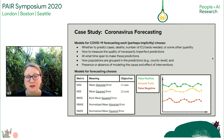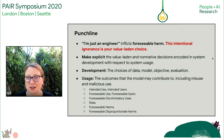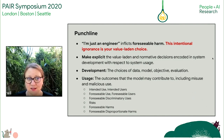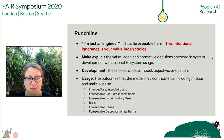The 'I'm just an engineer' approach inflicts foreseeable harm — this intentional ignorance is your value-laden choice. The goal in ethical model development is to make explicit, evaluated, and normative decisions encoded in development with respect to the system usage in context. Development considerations include the choices of data, model, objective, how to evaluate, and usage — including the outcomes the model may contribute to, including misuse and malicious use, foreseeable harms, foreseeable discriminatory uses, and all reasonable direct or side effects of different model decisions.